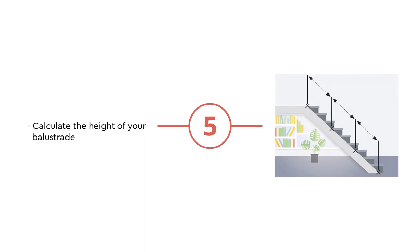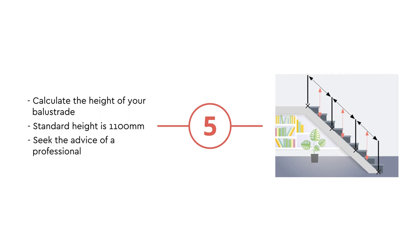Finally, calculate the height you would like your balustrade to be. The standard height of a balustrade is 1100mm. If you are unsure of what balustrade height is most suitable for your home, you should seek the advice of a professional.